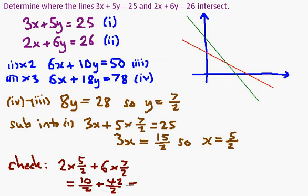So 10 halves plus 42 halves is 52 halves, which is equal to 26, which is exactly what I wanted from equation (ii) anyway. So excellent, it works.